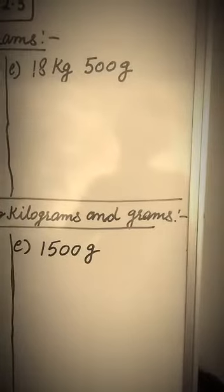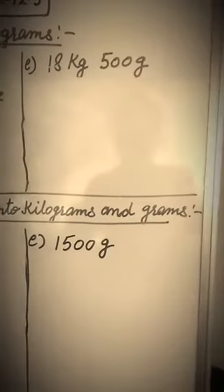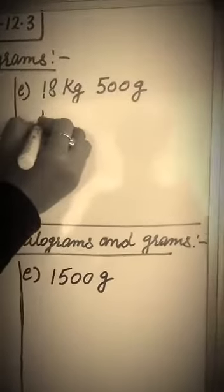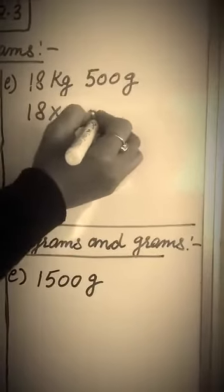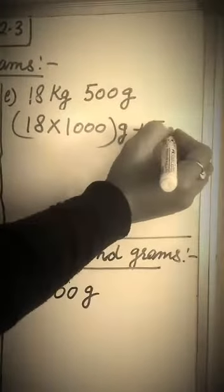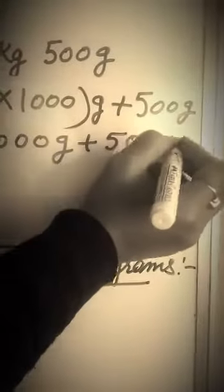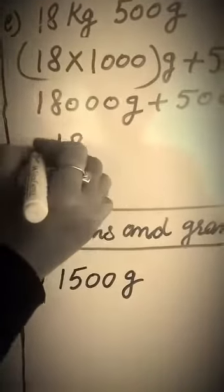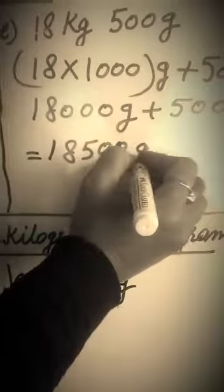We already have grams. Kilogram we need to convert to grams. So what do we do? 18 we multiply by 1000, then plus 500. We get 18000 grams plus 500 grams. When we add these two, we get 18500 grams.